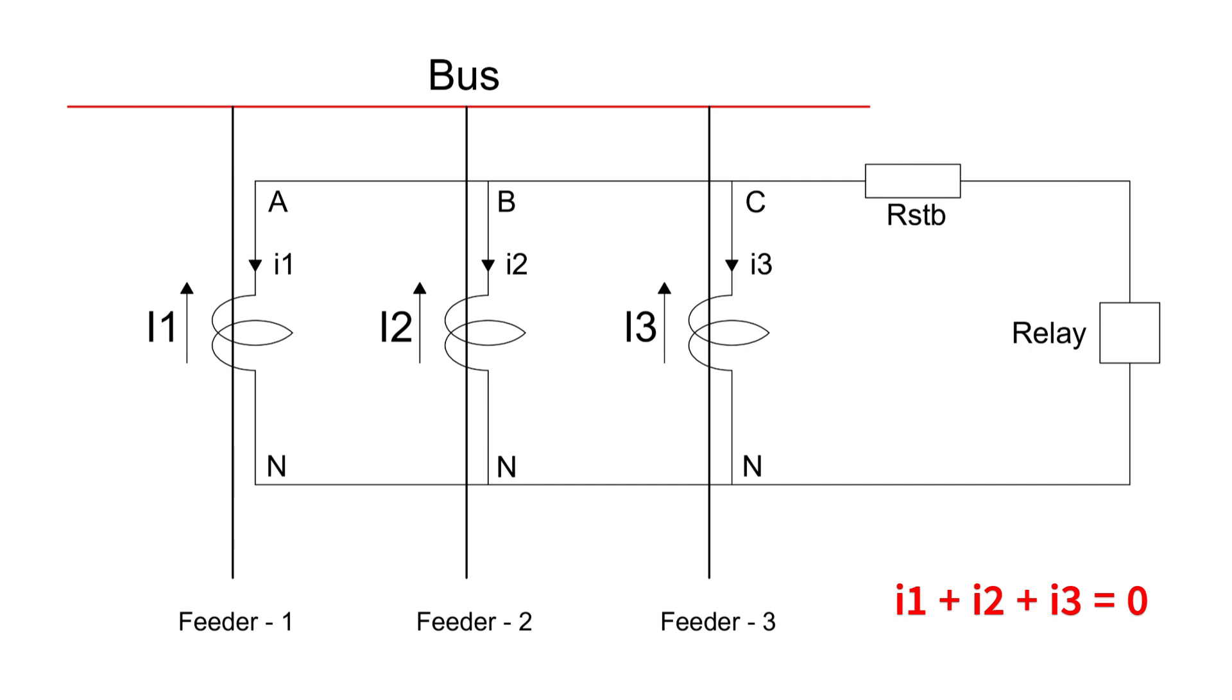Mathematically, under normal conditions, I1 plus I2 plus I3 will be zero. Since the relay sees only the summation of current, we typically employ an overcurrent element in high impedance differential protection. This is the key difference between high impedance and low impedance differential protection.